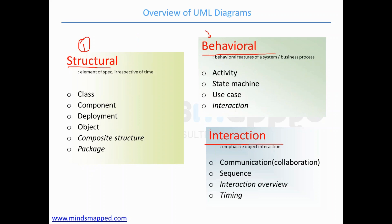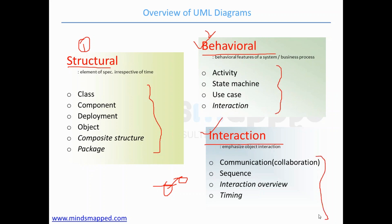Behavioral diagrams show how your system is behaving at a particular point in time — what activities or steps it will go through. Interaction diagrams show how components communicate with each other, for example how login communicates with payment or with the card. These are some examples, and we will be discussing a few of them today in class.